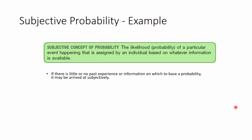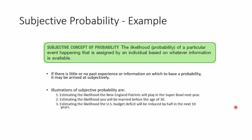So if there is no past experience, then the probability of a particular event needs to be estimated using subjective measures. Let's say, what's the chance that the US budget deficit would reduce to half in the next eight years? That's based on subjective understanding.